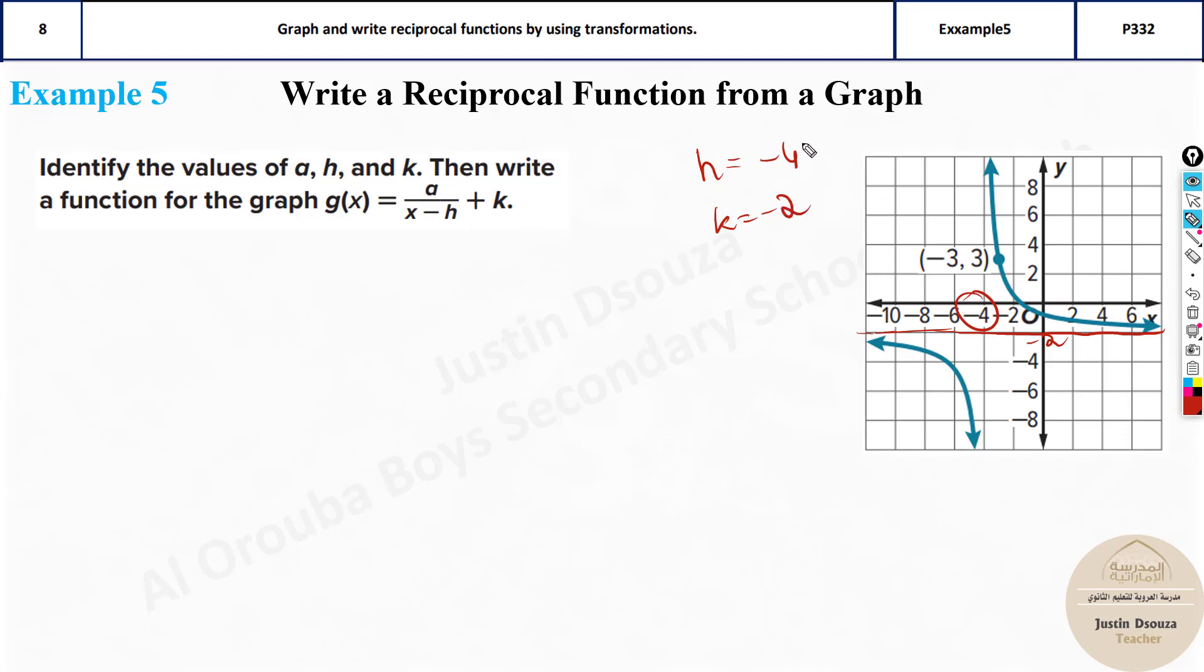Now we can get this, but how do we find a? Look at this given equation. This is the equation of the reciprocal function: y equals a by x minus, let me write what is h? It's minus 4 plus k is minus 2. Here we can find a if we know y and x. Don't you agree? If you substitute these two values only a will be unknown.